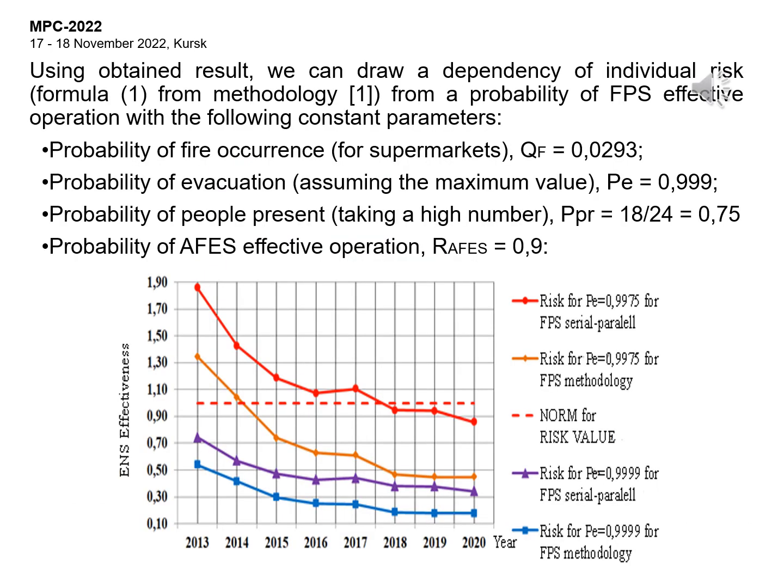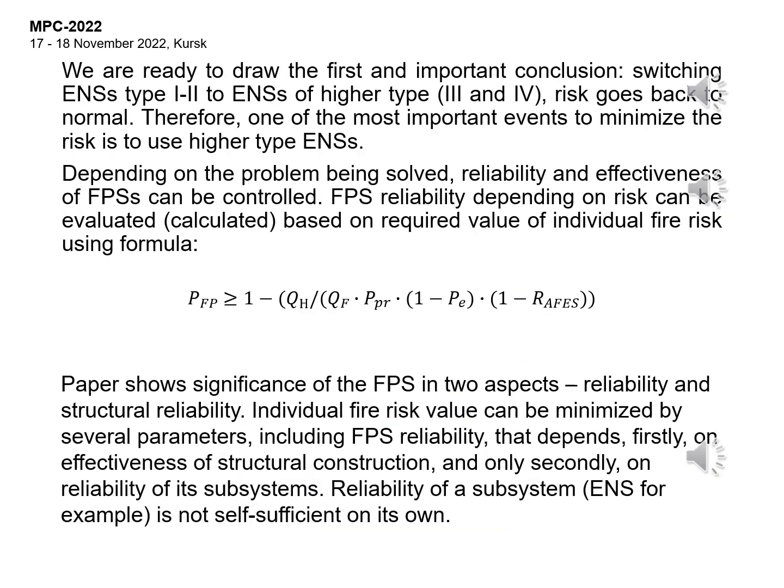Using the obtained results, we can draw a dependency of individual risk from the probability of FPS effective operation with the following constant parameters. We are ready to draw the first and important conclusion: switching ENS type I2 to ENS of higher type 3 and 4, risk goes back to normal. Therefore, one of the most important measures to minimize the risk is to use higher type ENS systems.